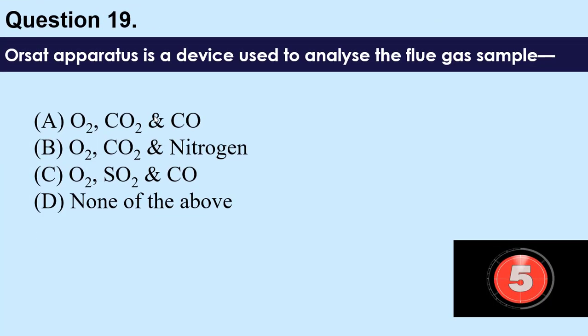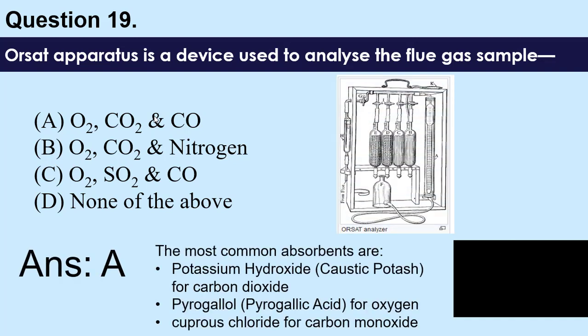Question number 19: The Orsat apparatus is a device used to analyze the flue gas sample for — A) O2, CO2, and carbon monoxide, B) O2, CO2, and nitrogen, C) O2, SO2, and carbon monoxide, D) none of the above. The answer is A — oxygen, carbon dioxide, and carbon monoxide. The absorbents used are potassium hydroxide (caustic KOH) for CO2, pyrogallic acid for O2, and cuprous chloride for carbon monoxide.